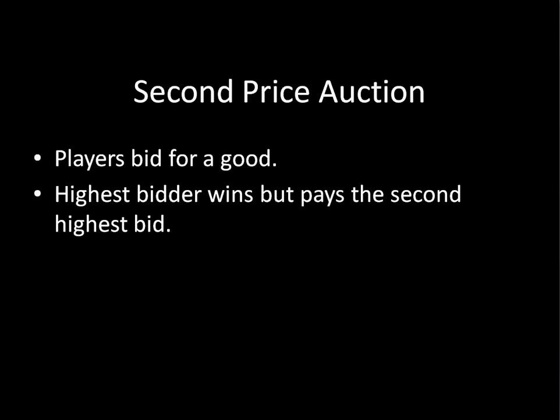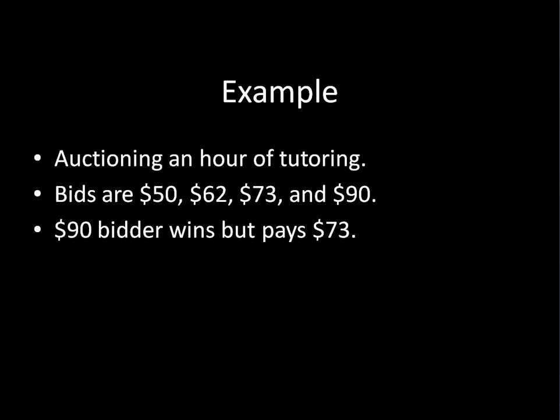But instead of the highest bidder paying his price — the price that he wrote down on his slip, as would be the case in a first price auction — the highest bidder pays the second highest price. So the auctioneer looks for the second highest bid and has the highest bidder pay the second highest bidder's bid. For example, imagine I was auctioning off an hour's worth of tutoring, and the bids are $50, $62, $73, and $90. The auctioneer will see that $90 is the highest bid, award the tutoring to that bidder, but only have them pay $73 — because that's the second highest price.